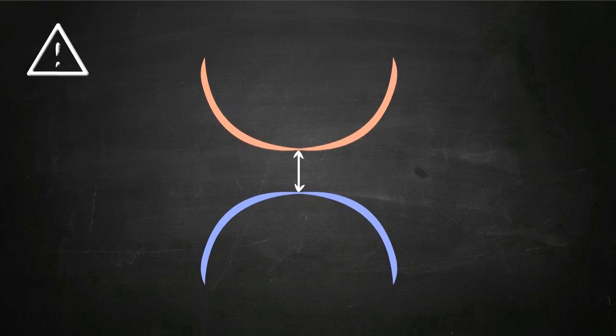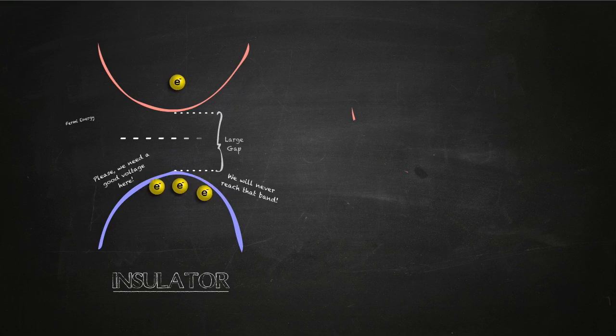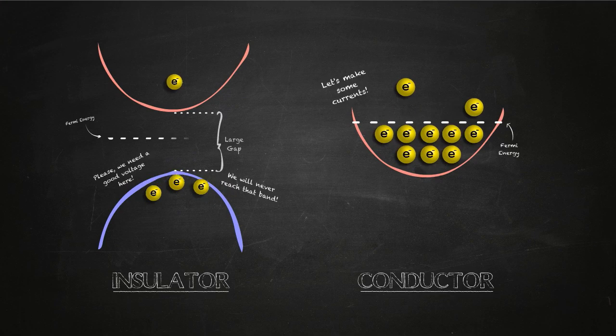Among other things, the size of the gap determines the conductivity of the material. A large gap, you have an insulator. A small or null gap, you have a conductor.